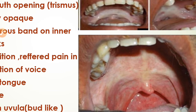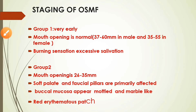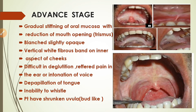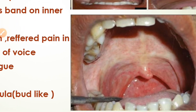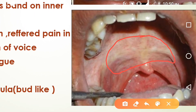There are five stages of OSMF. Group 1 (very early stage): mouth opening is normal — 37 to 60 mm in males and 35 to 50 mm in females — with only burning sensation and excessive salivation. Group 2: mouth opening is reduced to 26–35 mm; the soft palate and faucial pillars are primarily affected, the buccal mucosa appears mottled and marble-like, and red erythematous patches are present.